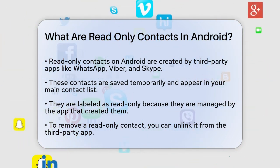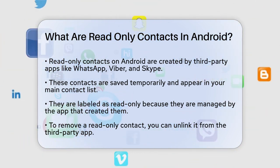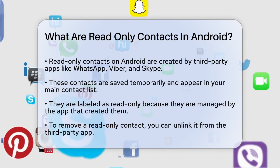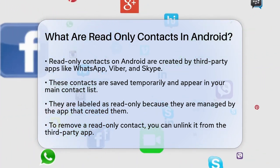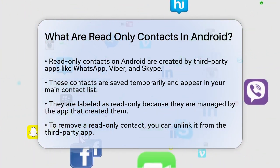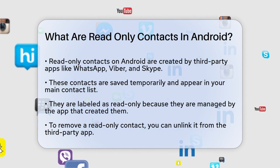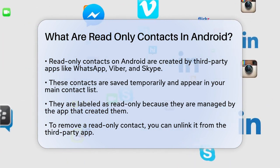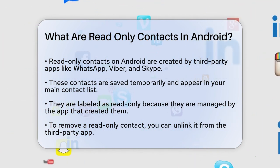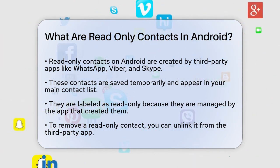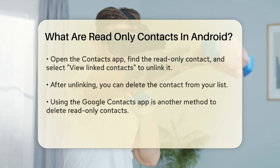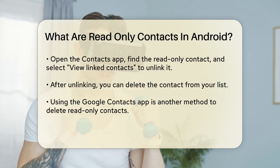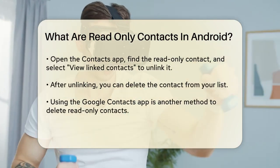Here's why they're read-only. These contacts are linked to the third-party app that created them. For example, if you have a contact saved through WhatsApp, it will show up in your phone's contact list, but you can't delete it directly because it's managed by WhatsApp.